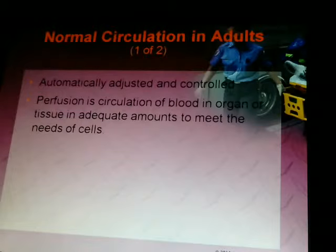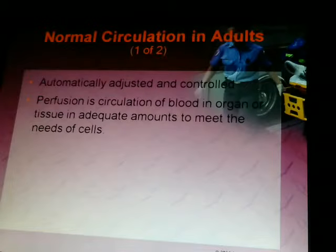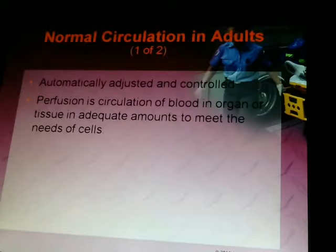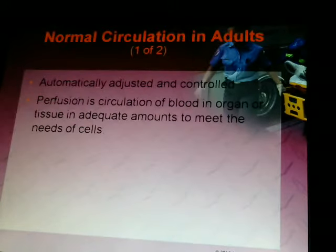Normal circulation in adults is automatically adjusted and controlled. Perfusion is the circulation of blood in organs and tissues in adequate amounts to meet the needs of the cells. When the body's tissues and organs are getting adequate oxygen and nutrients, that's perfusion. When you're not getting adequate perfusion, that's called shock — or more specifically, inadequate tissue perfusion.